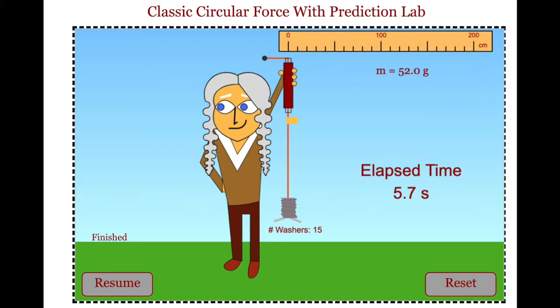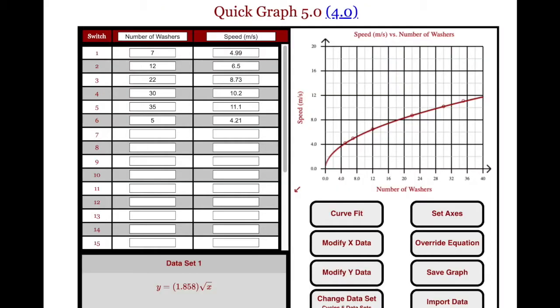And when they are done their 5 or 10 trials, I would suggest them graphing with the number of washers on the x-axis and the speed on the y-axis.